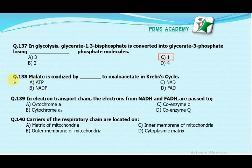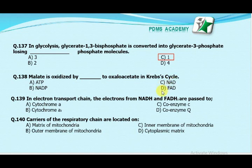Our next MCQ is: malate is oxidized by which one of the following to produce oxaloacetate in the Krebs cycle? Option A: ATP. Option B: NADP. Option C: NAD. Option D: FAD. Our correct answer is C, NAD.